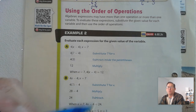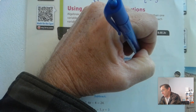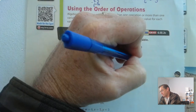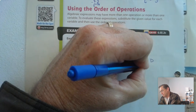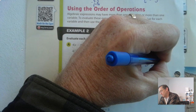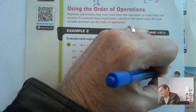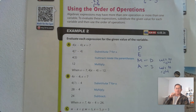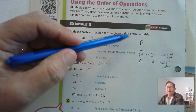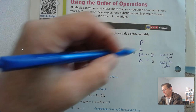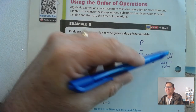Step 1: substitute 7 for x. So now we rewrite it as 4 times the difference of 7 and 4. We have to subtract what's inside the parentheses first. And just a quick review — you might be familiar with the phrase PEMDAS. Parentheses are first, followed by exponents, followed by multiplication or division left to right.